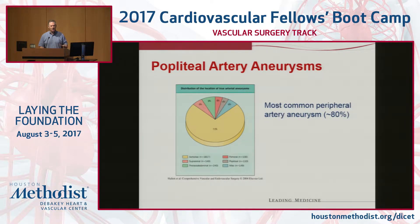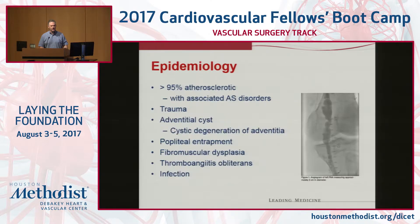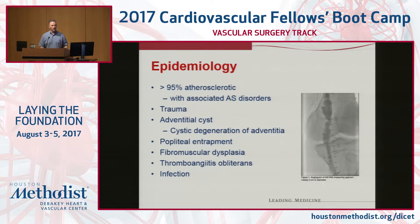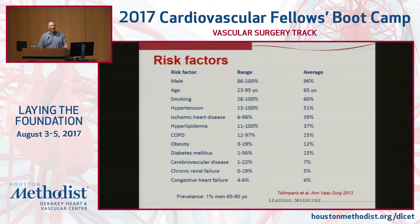Popliteal aneurysms are about 80% of peripheral aneurysms. Most are atherosclerotic in origin, about 95% or more. There are other less common etiologies you may encounter through your career — adventitial cystic disease, entrapment, FMD, thromboangiitis obliterans — important to know about. Most popliteal aneurysms occur in older men who are smokers.